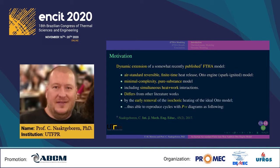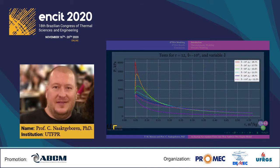The FTAJ model differs from other literature works by the early removal of the isochoric heating of the ideal auto model, thus being able to reproduce cycles with Andrews or PV diagrams. In the shown tests, the crankshaft angular span during heat release (parameter delta) increases from 10 degrees in warmer colors to 110 degrees in colder colors, representing progressively higher engine speeds. Results show that as engine speed increases, the PV cycle transitions from a pointy ideal auto cycle to smoother experiment-looking ones, with decreasing maximum pressure, increasing exhaust temperatures, and decreasing thermal efficiencies, illustrating notable prediction capacity for a simple reversible model.